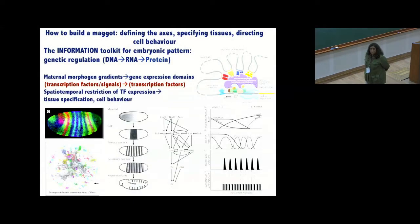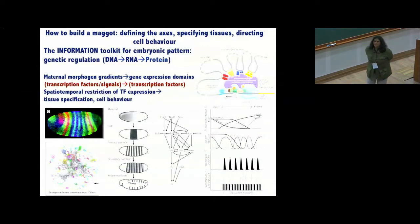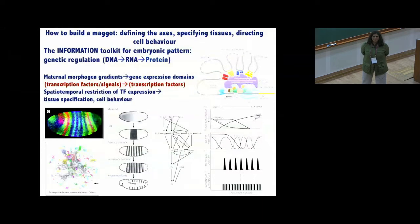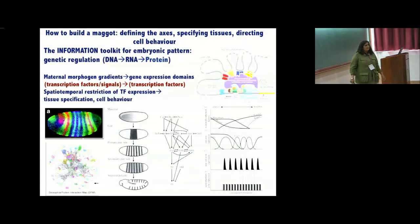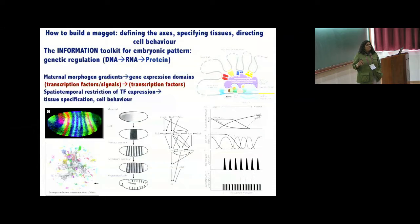In the last lecture, we set up the problem of how you define the axes of an embryo and defined several axes that characterize it. Today I'm going to give you the logic of how axis specification is achieved and how gene regulatory mechanisms underlying axis specification not only help confer cell fate, but also help direct the cell behavior necessary to sculpt tissues into their specific shapes.